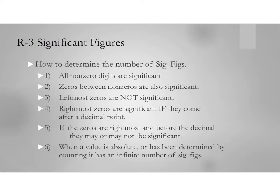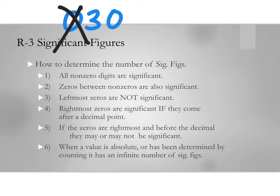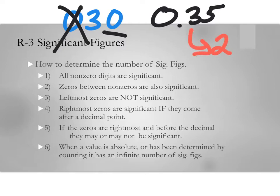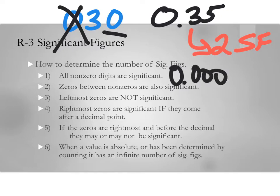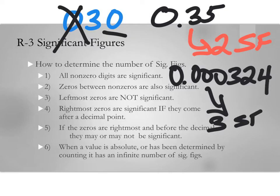Rule three: leftmost zeros are not significant. For example, if I write '030 years old,' no one would include that leading zero. This also applies to decimals — if I give you 0.35, that has only two significant figures. If I give you 0.000324, that has only three significant figures, because those leading zeros are not significant — they are leading zeros.